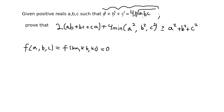What this allows us to do is say: since these two sides are equal and it doesn't matter the scaling, we can always scale our a, b, and c such that a plus b plus c is equal to 4. So I'm just going to let a plus b plus c equal 4, and that also means that abc is equal to 1.